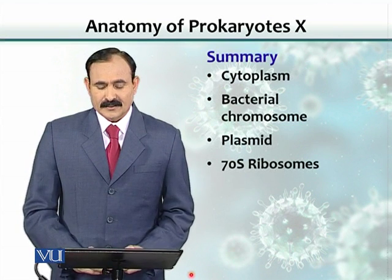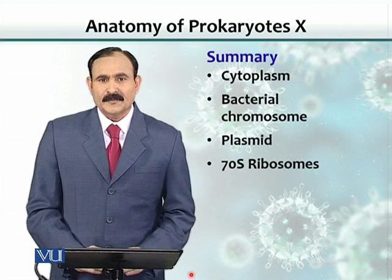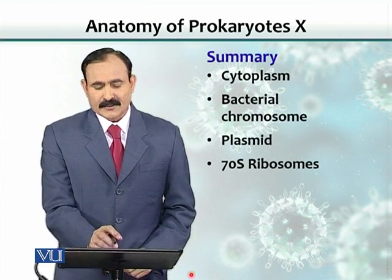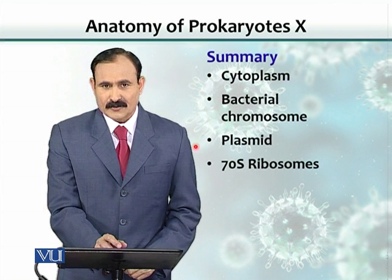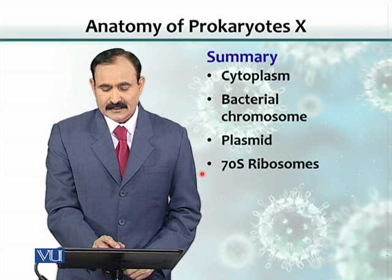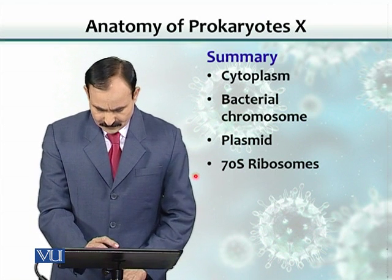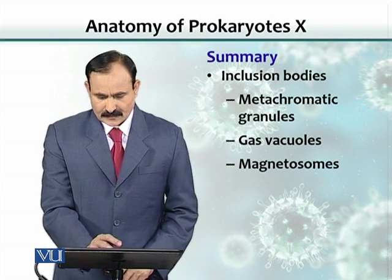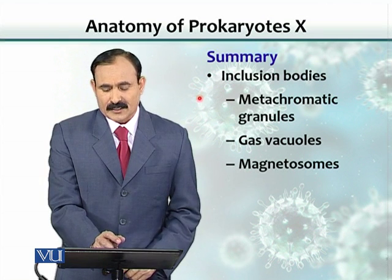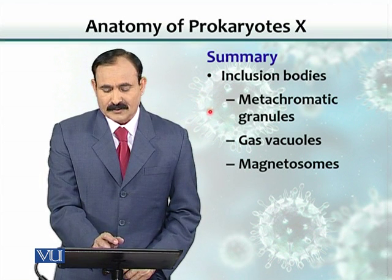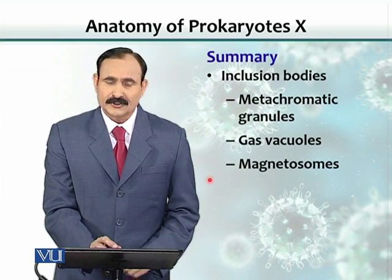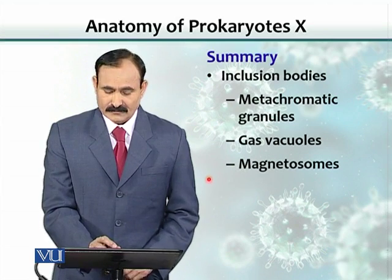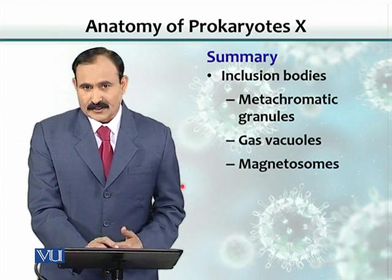In summary, the cytoplasm contains the bacterial chromosome, extra-chromosomal DNA as plasmid, ribosomes, and inclusion bodies that include metachromatic granules, gas vacuoles, magnetosomes, and others.